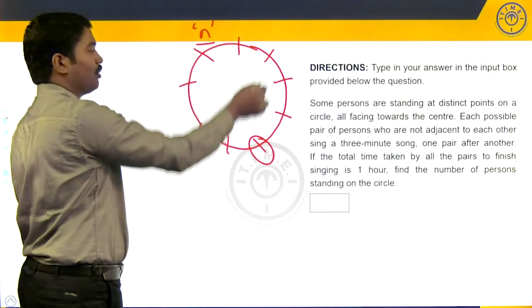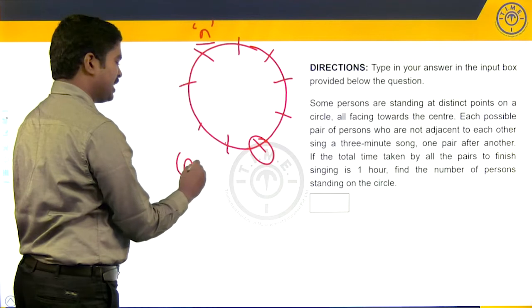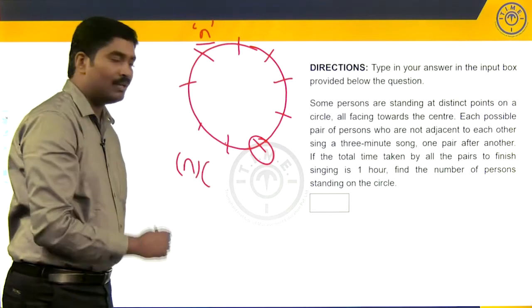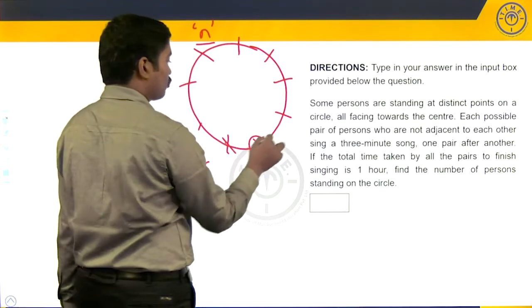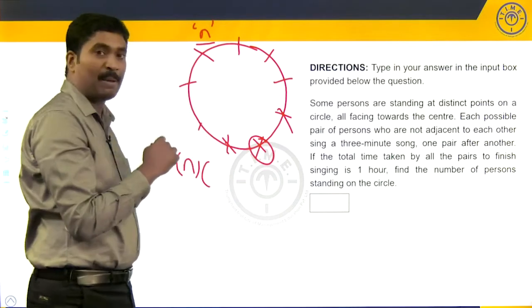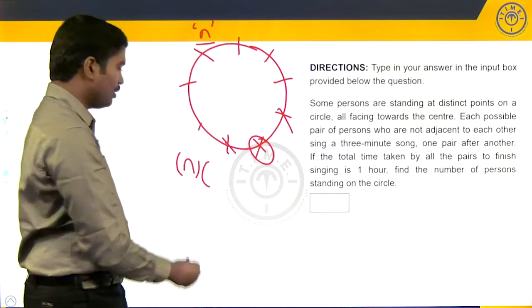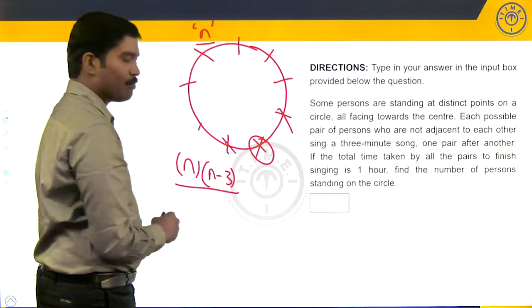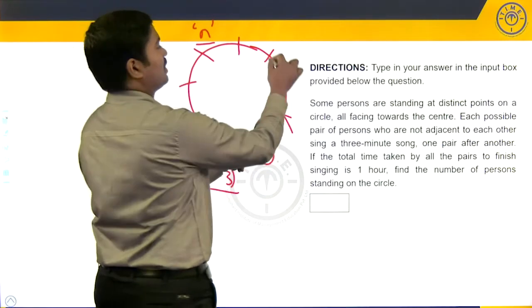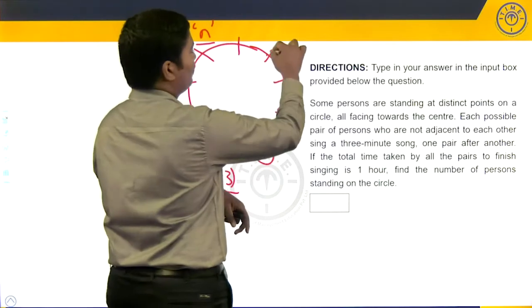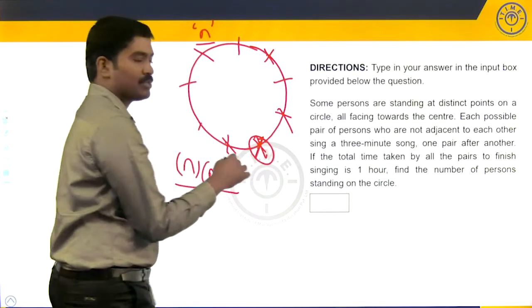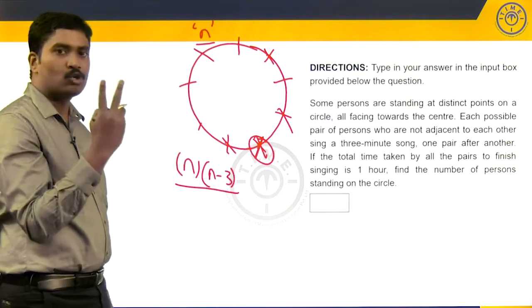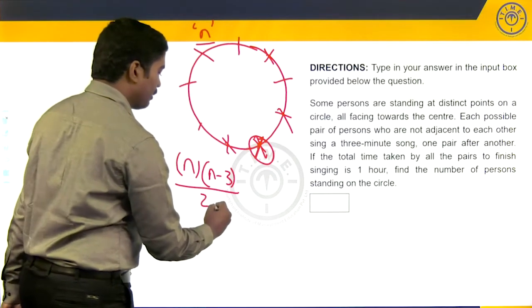Out of the n person standing on the circle, the first person will pick him in n ways. Then what we'll do? We'll exclude him, we'll exclude the immediate neighbors. There are a total of n minus three people who can be his pair. So, we'll choose the second person in n minus three ways. Now, there's one problem. We select this person and this person. Similarly, when we go here, we'll select this person and this person. So, each case will be counted two times, this double counting. So, n into n minus three by two.